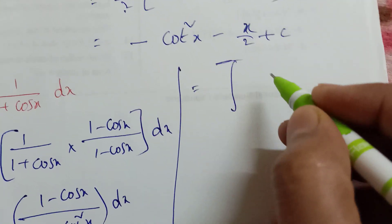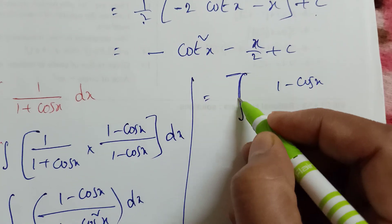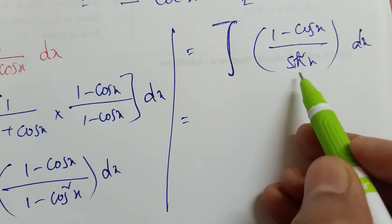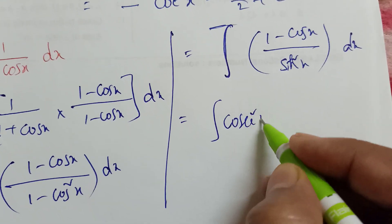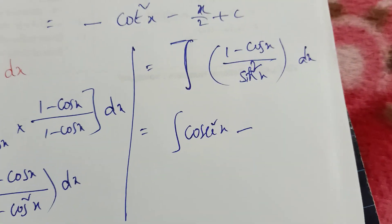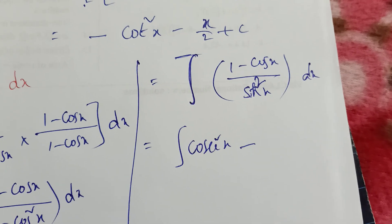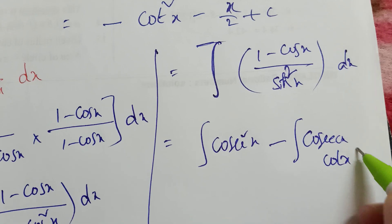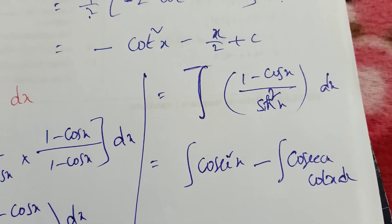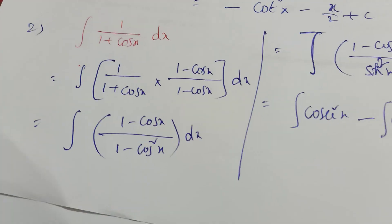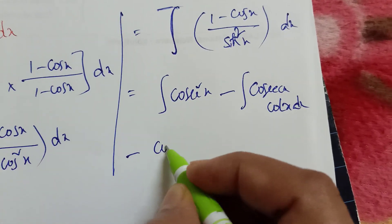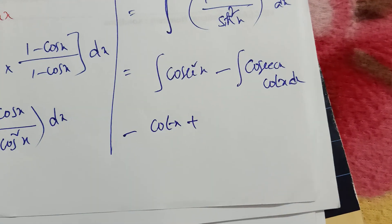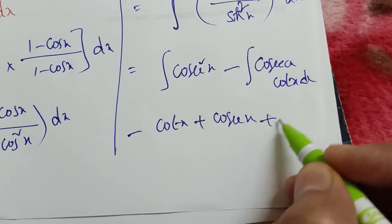So we have integration of (1 - cosx) / sin²x dx. Split into two terms: integration of 1/sin²x minus cosx/sin²x. Now 1/sin²x is cosecant²x. For cosx/sin²x: cosx/sinx is cotx and 1/sinx is cosecant, so this becomes cosecant·cotx. Integration of cosecant²x is -cotx. Integration of cosecant·cotx is -cosecant. So minus times minus gives plus cosecant x. Final answer: -cotx + cosecantx + c.